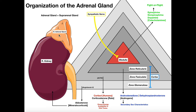Let's first talk about where the adrenal glands are. The adrenal glands sit on top of the kidneys — kind of like a hat. The kidneys wear a hat; the hat is the adrenal gland. There's one on each side. Because they sit on top of the kidney, another name you might see is the suprarenal gland. Supra means above and renal refers to kidneys, so they're suprarenal glands.